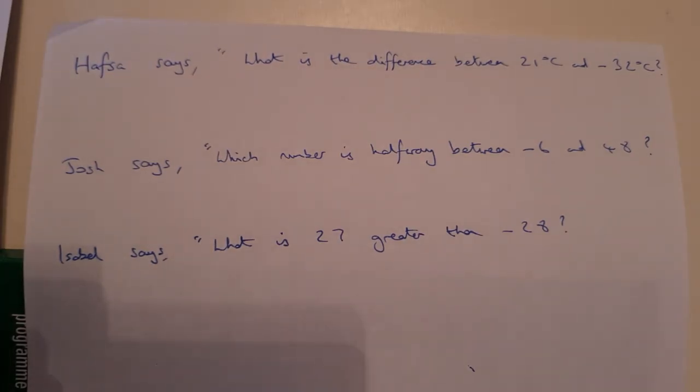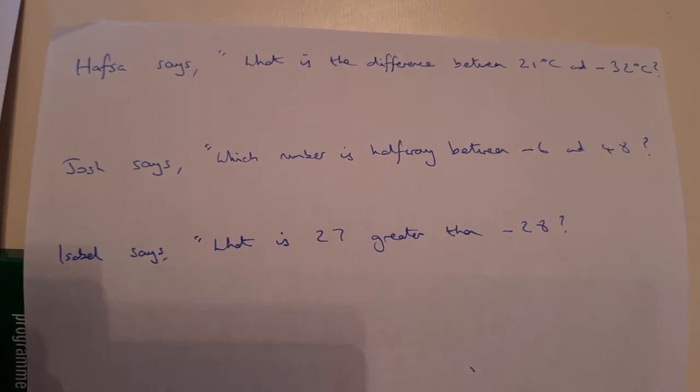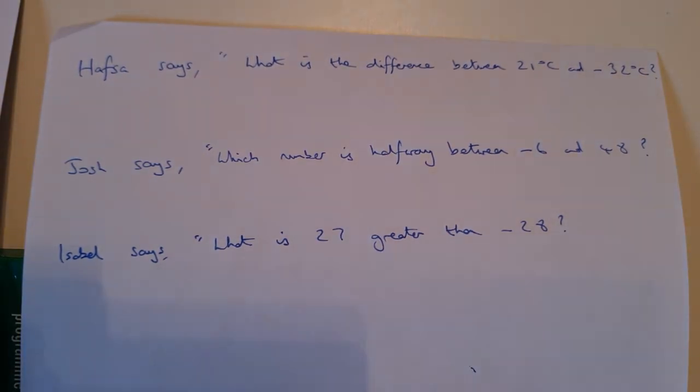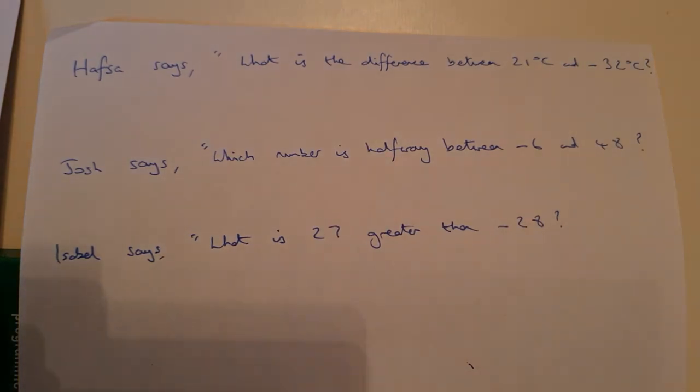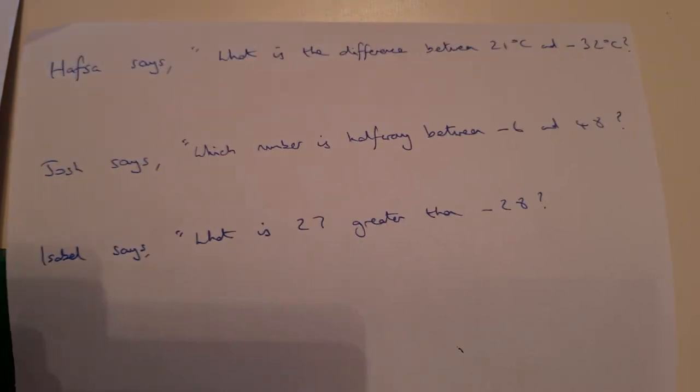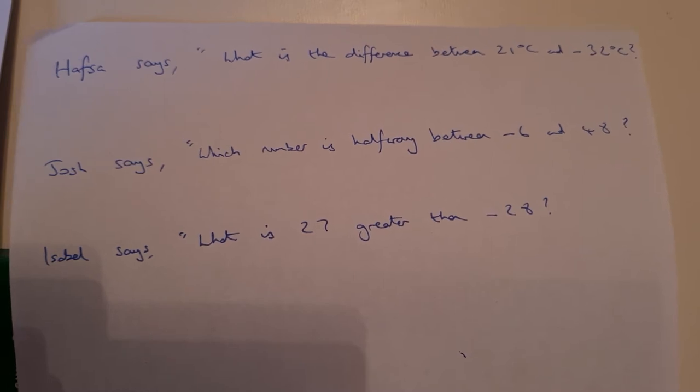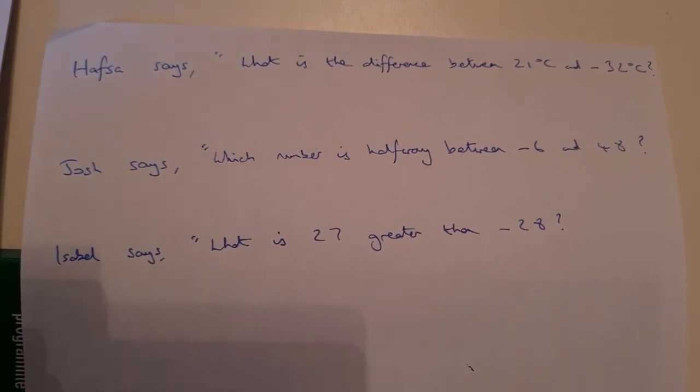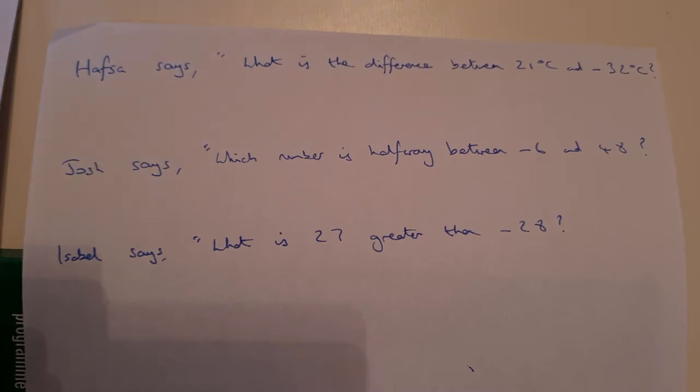Here are the next set of questions that you'll come across on the sheet. What we have to do is work out what these three children are saying, and then put them in order from the smallest to the largest. Hafsa says, what is the difference between 21 degrees C and minus 32?